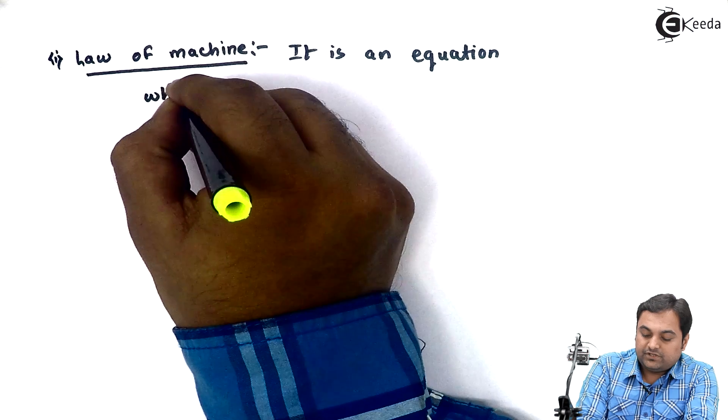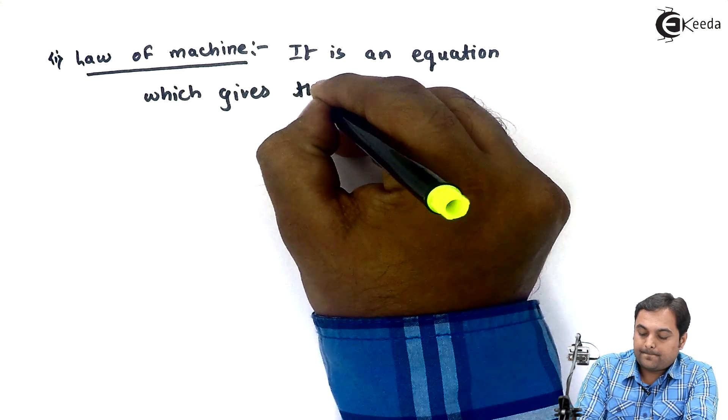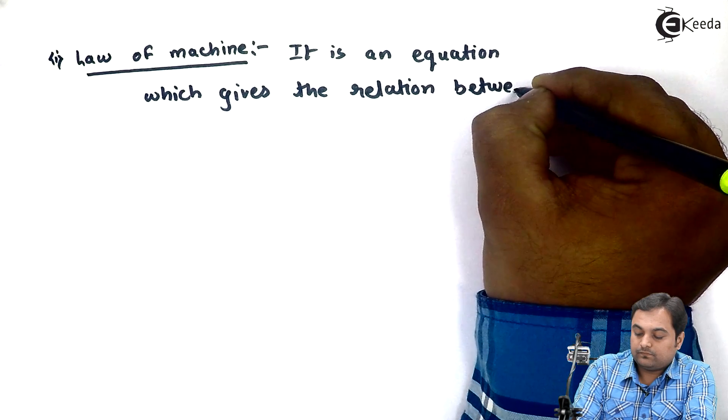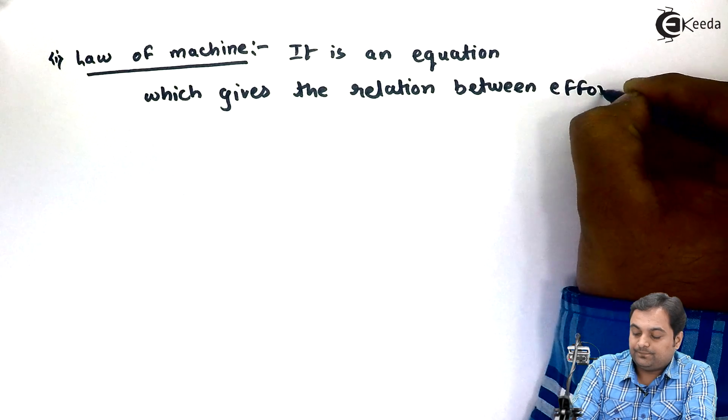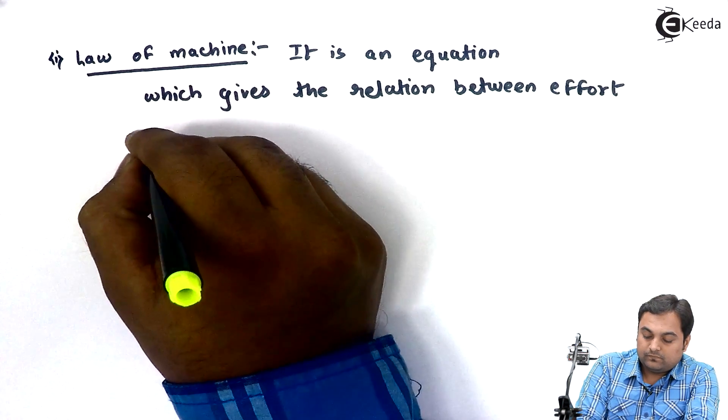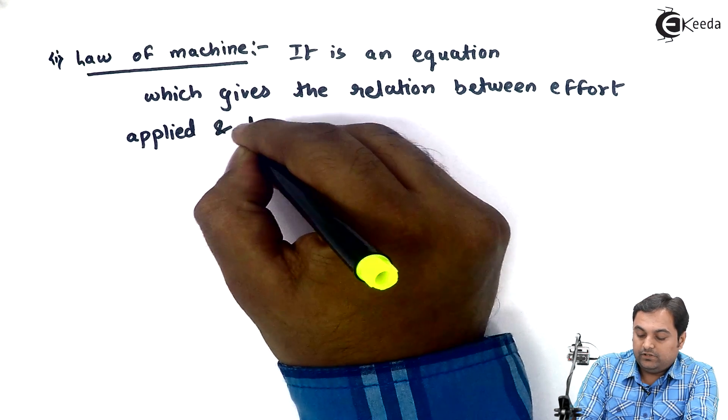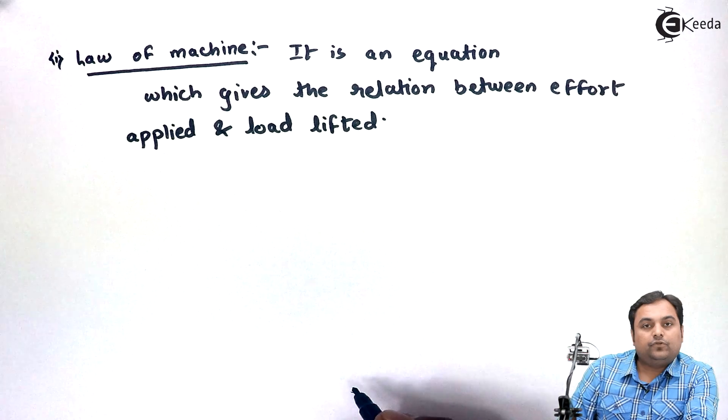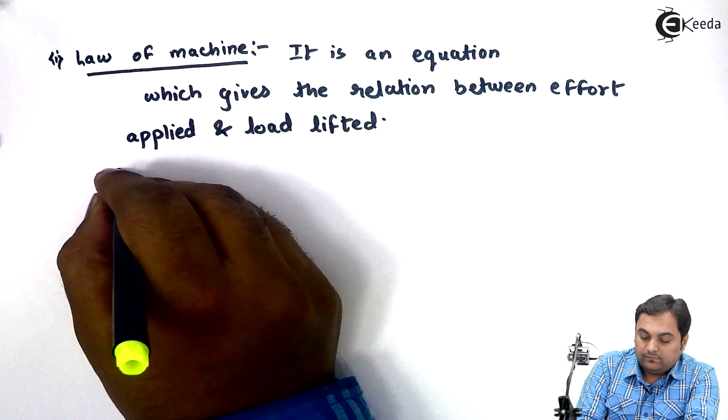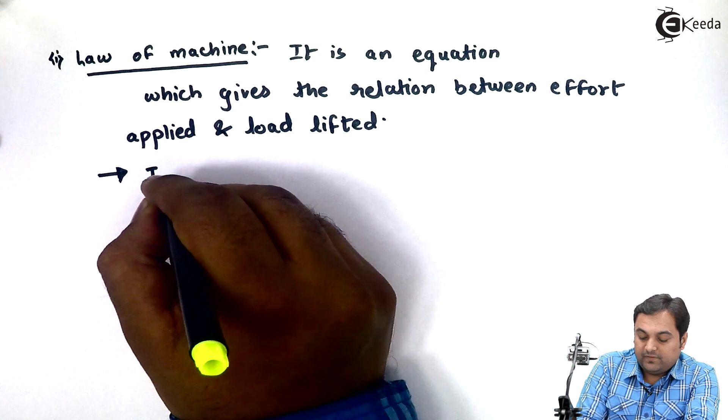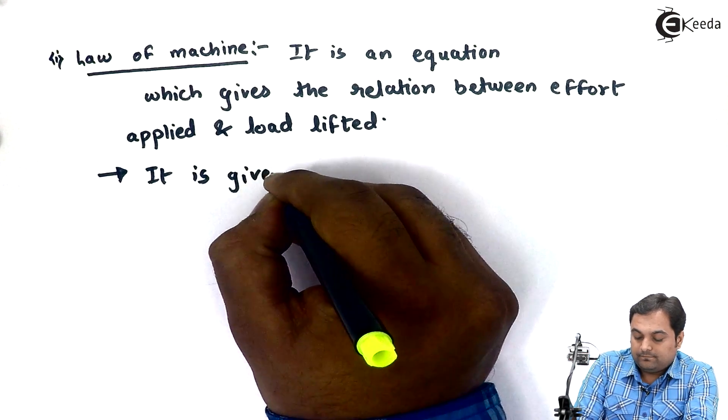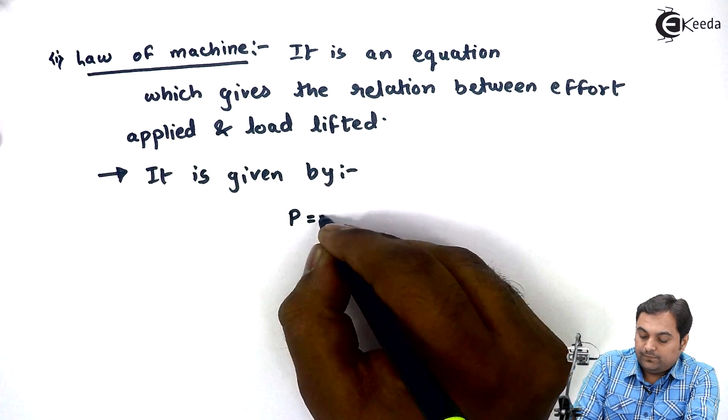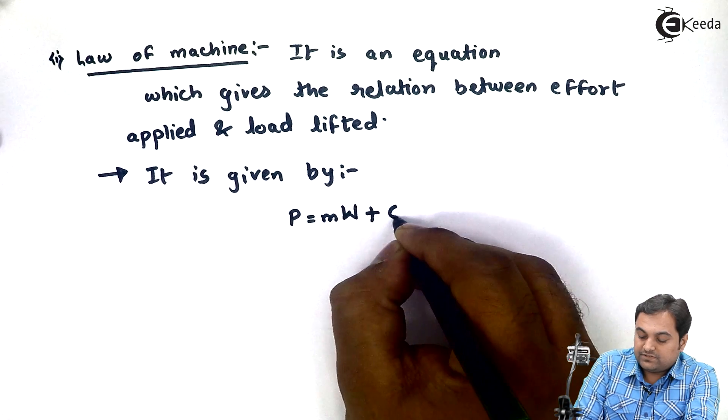Which gives the relation between effort applied and load lifted. So I'll write that equation. Law of machine is given by the equation P equals small m into W plus C.